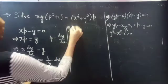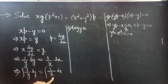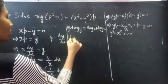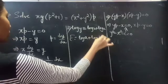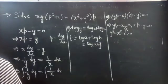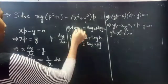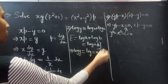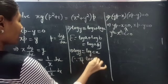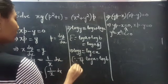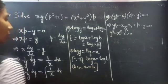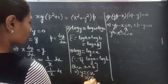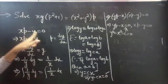Integral 1 by y dy is log y, equals integral 1 by x dx which is log x. Since we have both terms in log, we consider the integration constant as log C. Using the property log A plus log B equals log AB, this becomes log y equals log CX. Since log A equals log B implies A equals B, we get y equals CX. Therefore y minus CX equals to 0, which is the solution for xP minus y equals to 0.